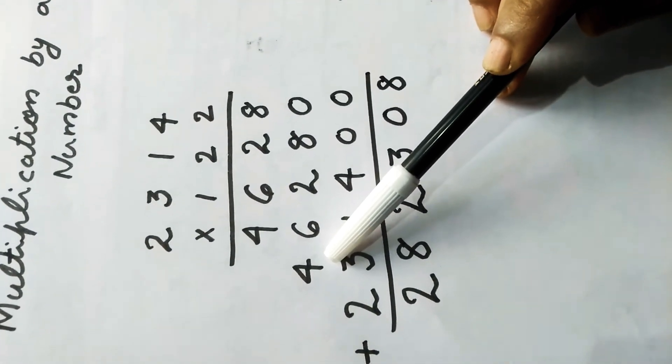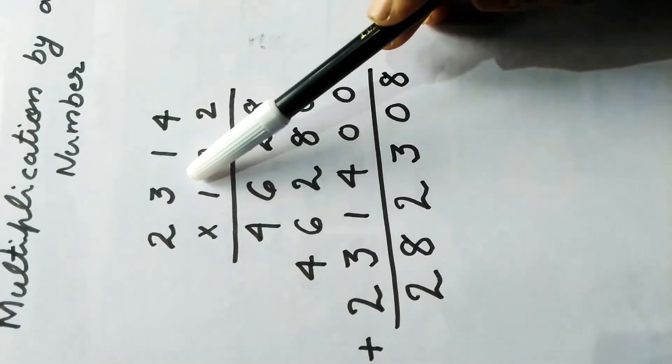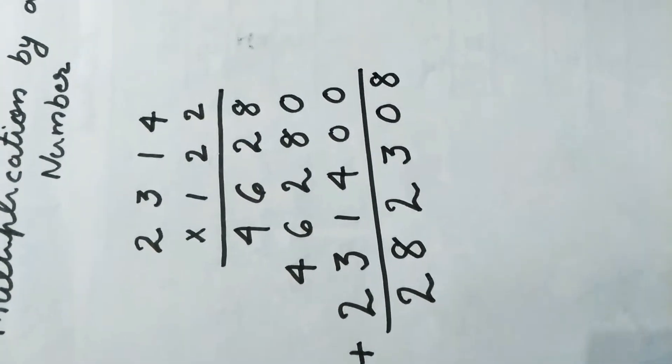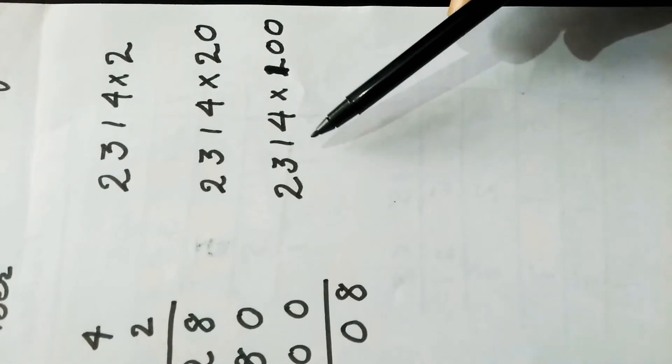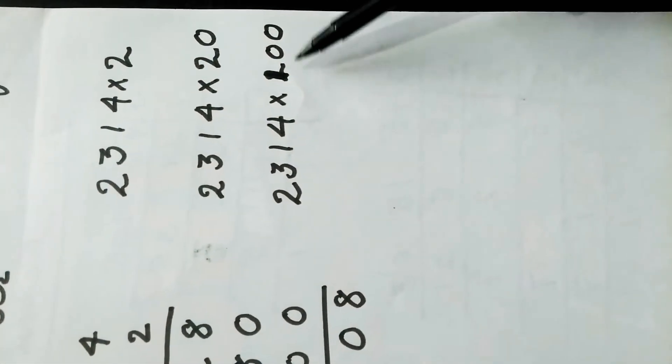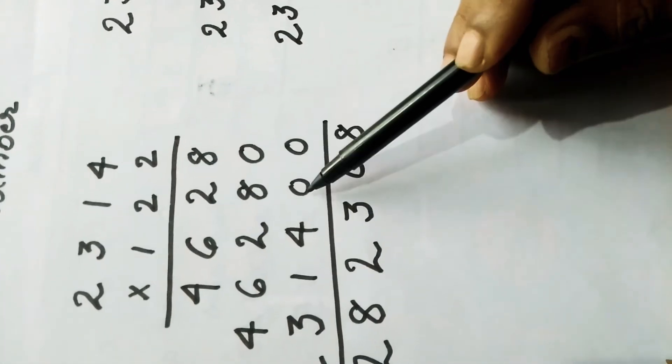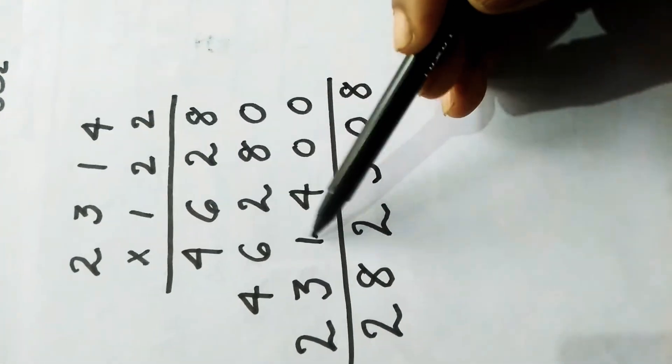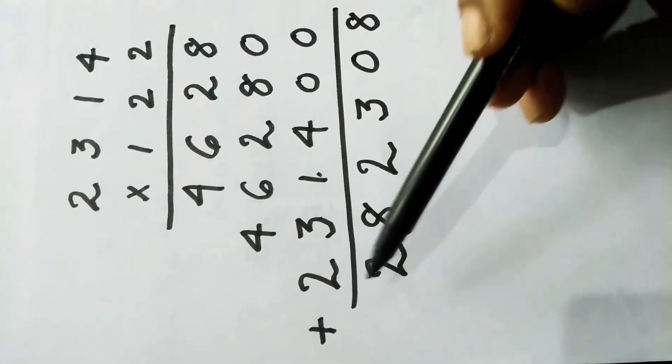Next, the third step is we multiply 2,314 multiplied by 1 in the hundreds place. We put two zeros in the ones and tens places, then 1 four is 4, 1 one is 1, 1 three is 3, 1 two is 2.